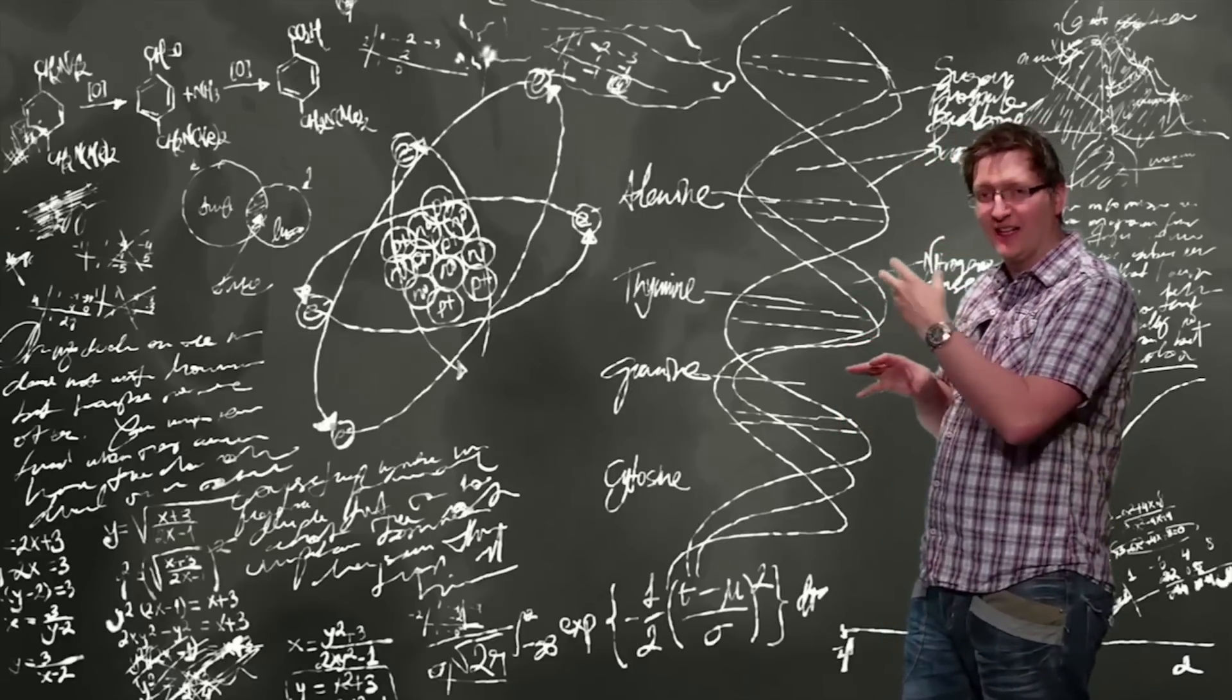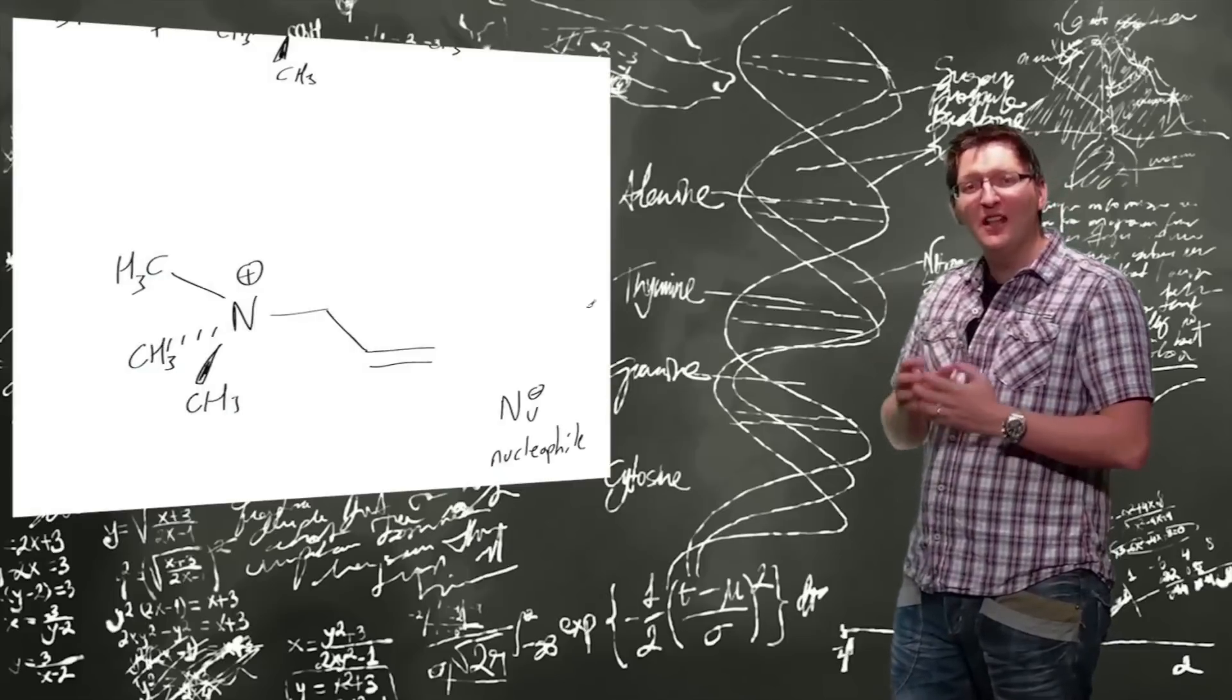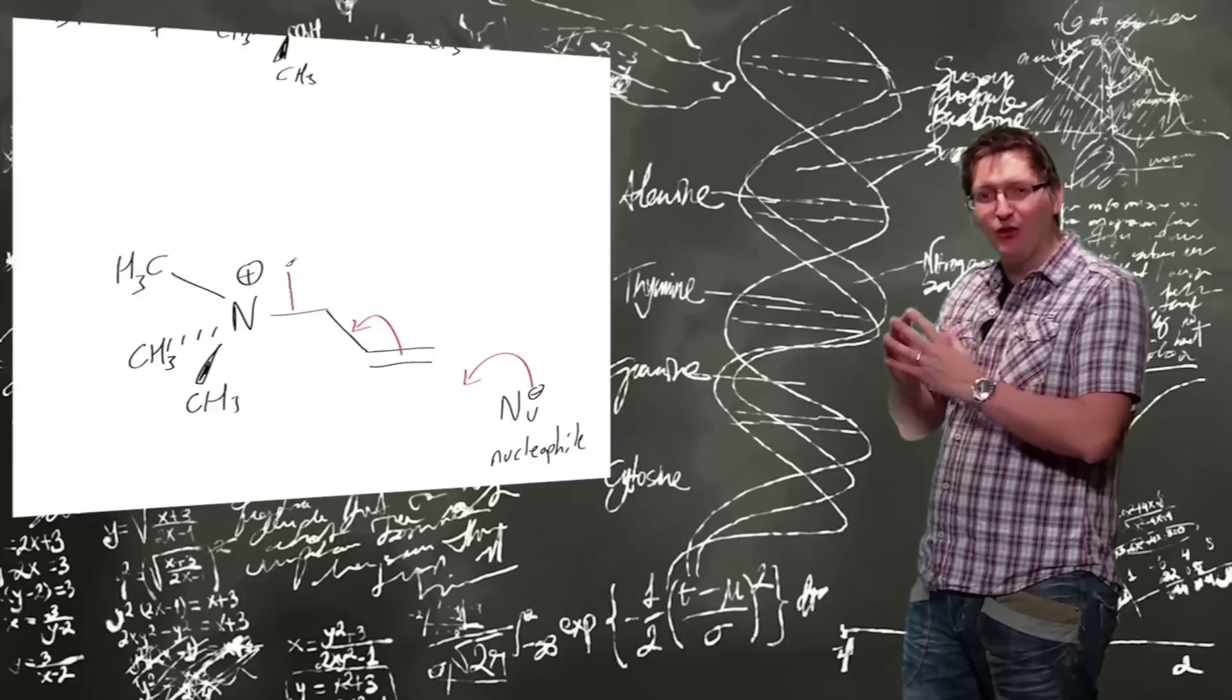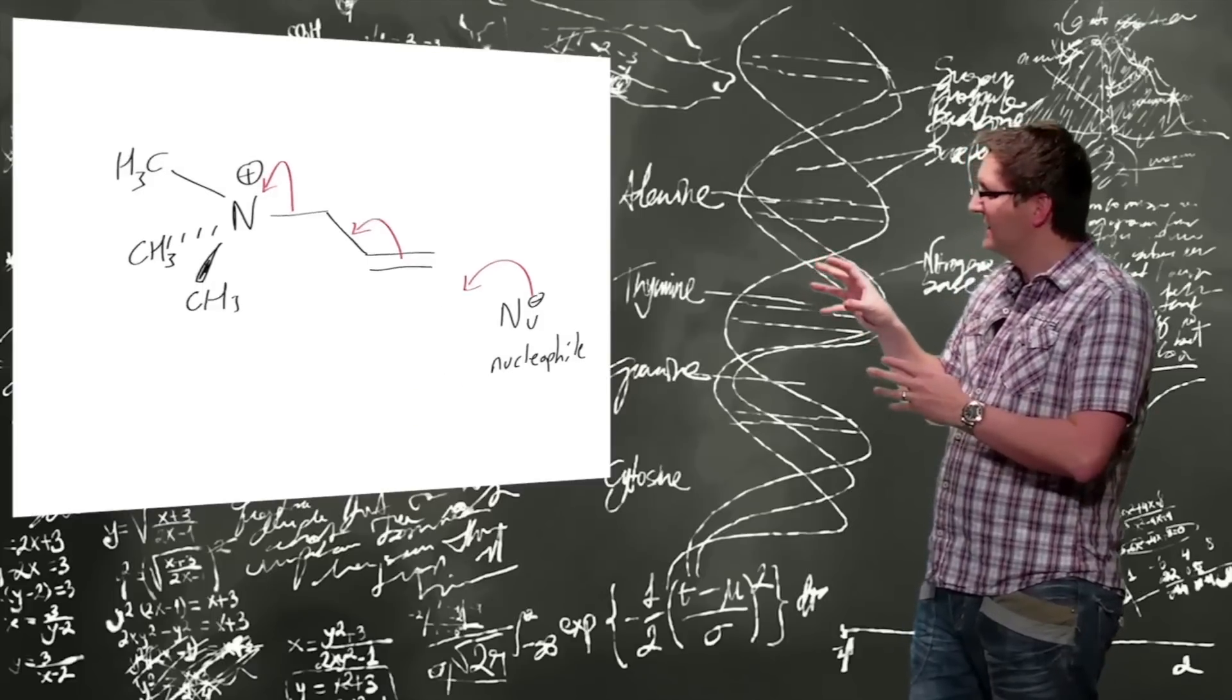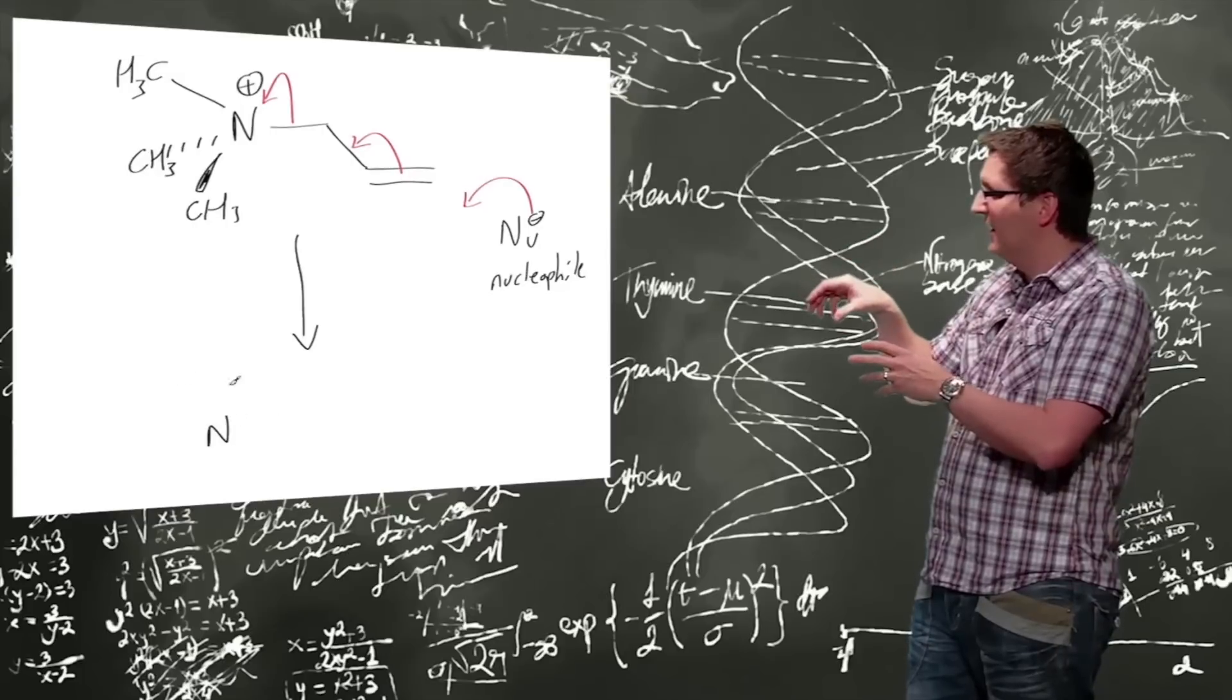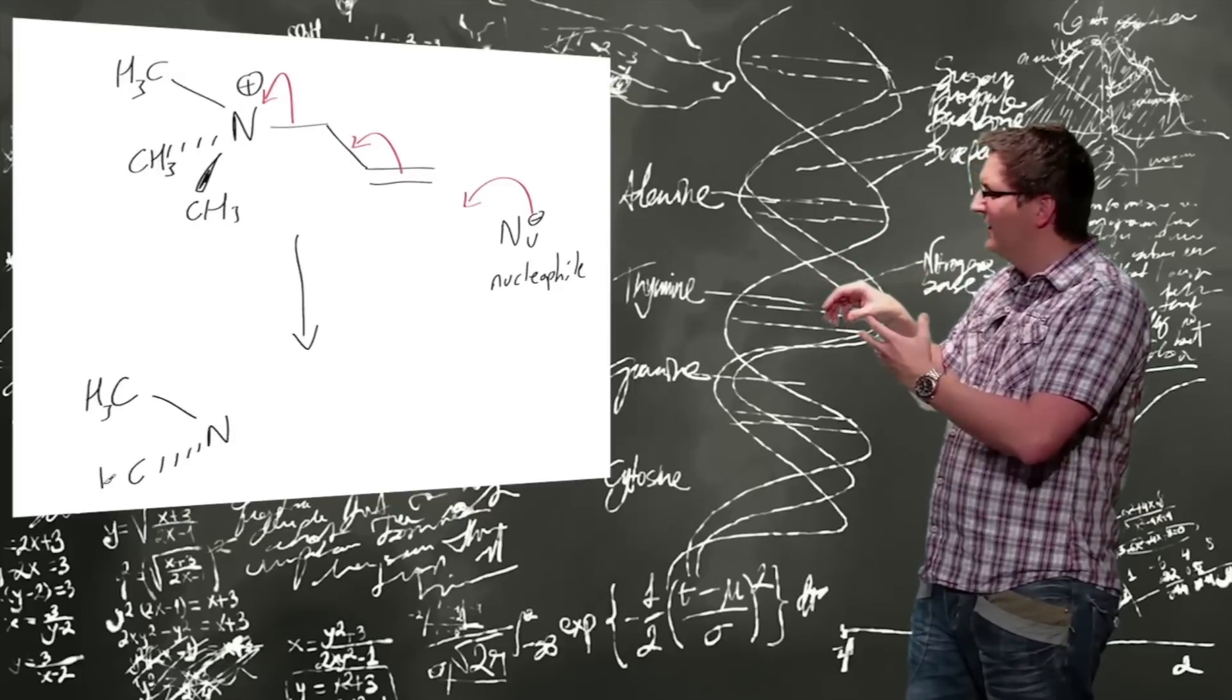The nucleophile can attack an electron deficient species. Those electron deficient species are called electrophiles. Electrophiles are electron-loving species.